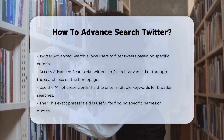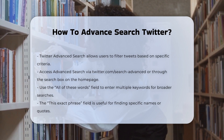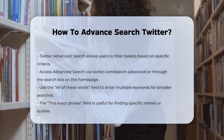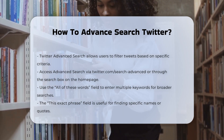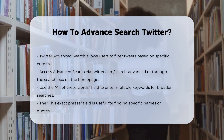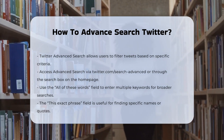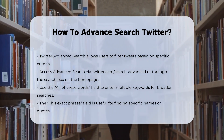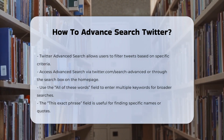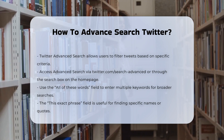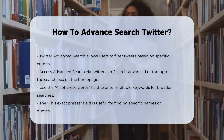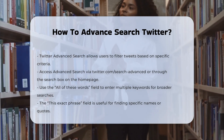Accessing advanced search. To access Twitter advanced search, you can use the Twitter website. On the desktop, you can directly visit twitter.com/search-advanced or navigate to it through the search box on Twitter's homepage by clicking on 'More' and then selecting 'Advanced Search.'